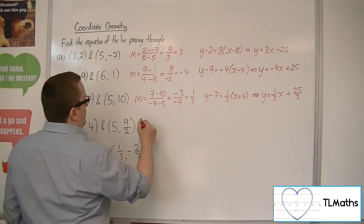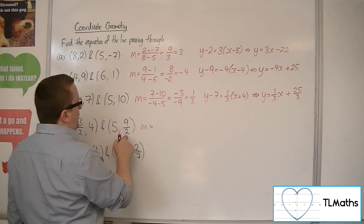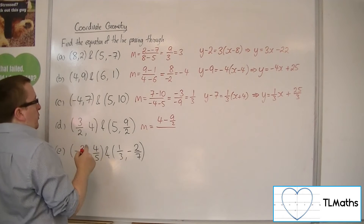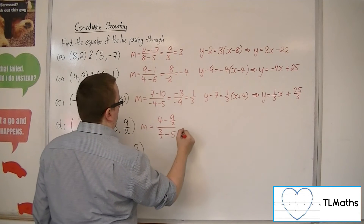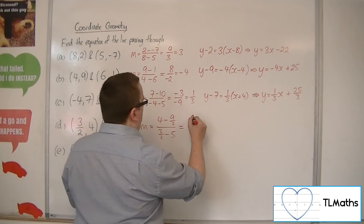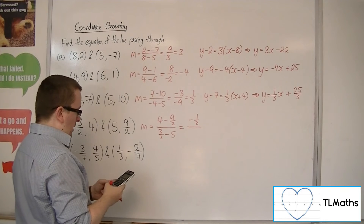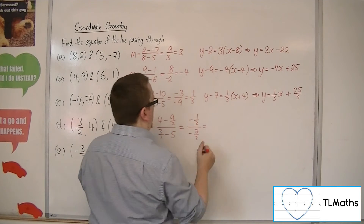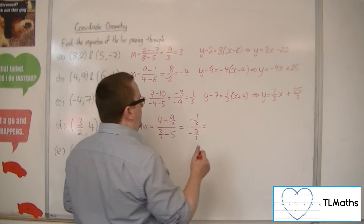So for d, the gradient of the line: difference in the y-coordinates, 4 take away 9 halves, over the difference in the x-coordinates, so 3 halves take away 5. So 4 take away 9 halves gives me minus 1 half in the numerator. 3 halves take away 5 in the denominator gives minus 7 halves. So minus 1 half divided by minus 7 halves is 1 seventh.